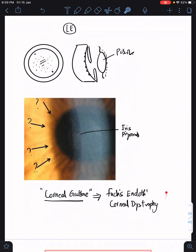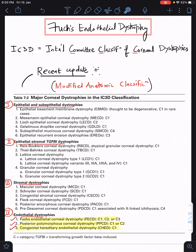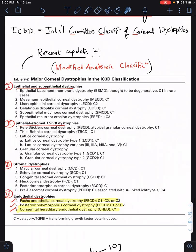He has Fuchs endothelial corneal dystrophy. The IC3D International Committee for Classification of Corneal Dystrophies gives this very recent update: modified nativity classification - epithelial and subepithelial dystrophies, epithelial stromal dystrophies, stromal dystrophies, and endothelial dystrophies. Please pause the video and take a screenshot of this very important classification.